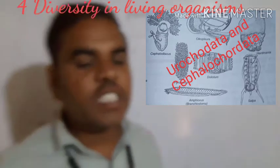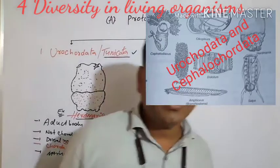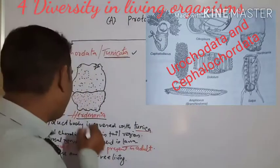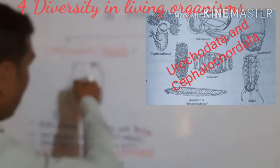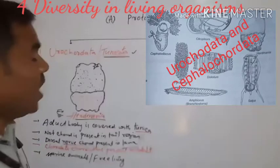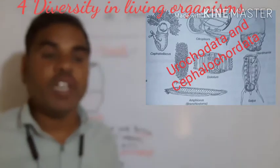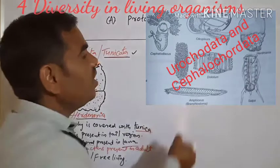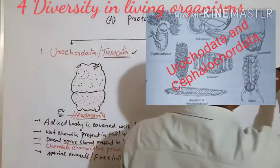The best examples of Urochordata or Tunicata are Pyrosoma and Herdmania. Next, we have to learn about Cephalochordata.